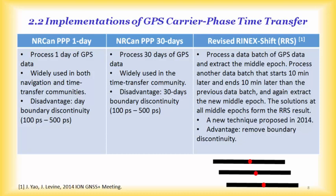For processing the GPS data, the NRCAM PVP one-day method is a standard processing approach that processes one day of GPS data and is widely used in both navigation and time transfer communities. Its disadvantage is day boundary discontinuities, due to uncertainty in estimating phase ambiguity — typically as large as 100 to 500 picoseconds.